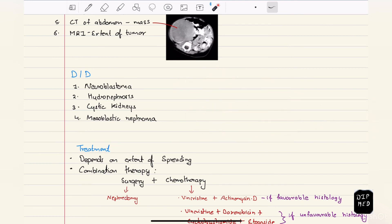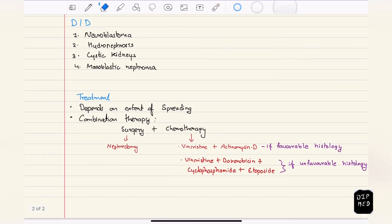Finally coming to the treatment section. The treatment of Wilms tumor depends on extent of spreading of the tumor. Combination therapy is the preferred one, which includes surgery and chemotherapy. We can start with either of these. Whether surgery is done first or chemotherapy done first, the result is going to be the same. Surgery is nephrectomy, we remove the kidney.